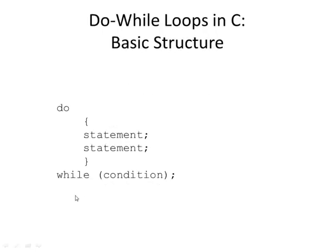A do-while loop is very similar. Here's the basic structure: we have the word do, with no condition up top because it's going to execute no matter what — it always runs at least one time. Then it comes down and tests the condition: do I want to do it again? It always does it once; the condition determines whether to repeat.